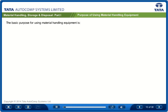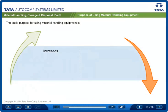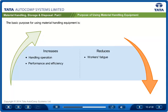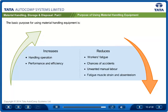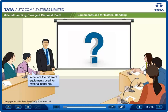The basic purpose for using material handling equipment is primarily to speed up the handling operation and reduce worker's fatigue, thus improving his performance and efficiency. These devices also reduce the chances of accidents and reduce unmounted manual labor such as lifting and shifting heavy parts, thus reducing fatigue, muscle strain and absenteeism.